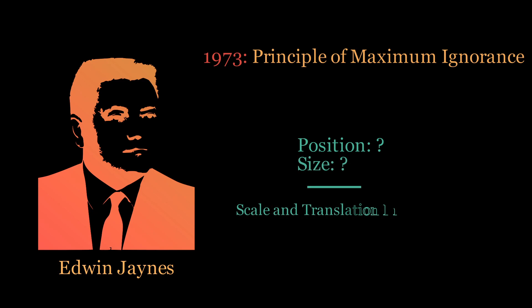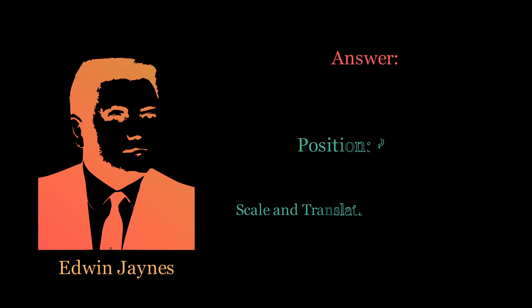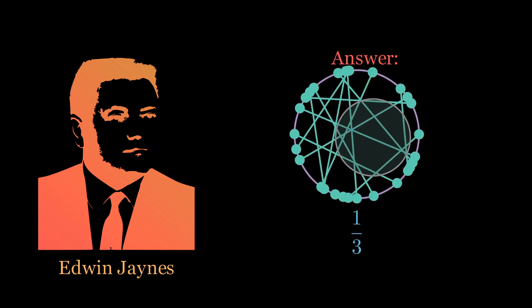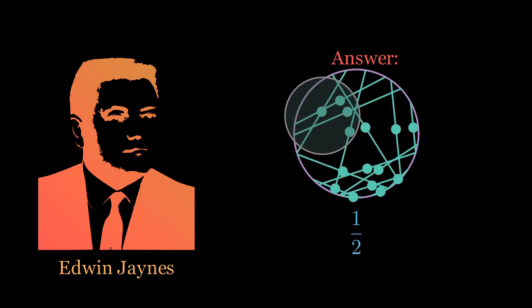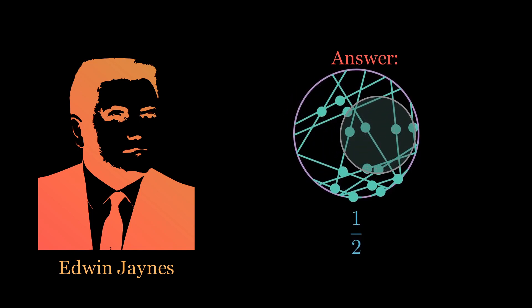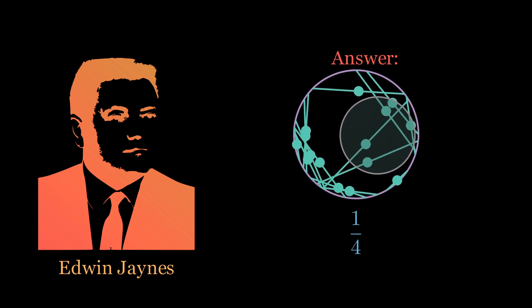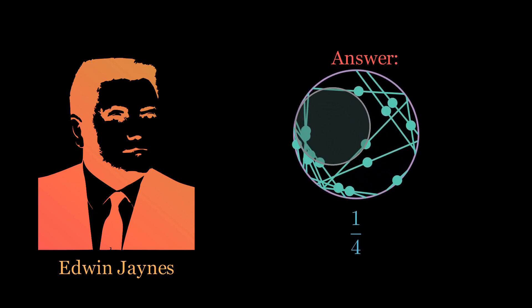In 1973, though, came Edwin Jaynes and proposed a solution based on his principle of maximum ignorance, that we should not use any information that is not given in the statement of the problem. He suggests that since position and size is never mentioned in the question, the solution must be both scale and translation invariant. In other words, changing the size or position of the circle should not change the answer. We can see, then, that this eliminates the first and third method, as moving around a smaller circle around the area would change the number of longer chords. He showed that this invariance is actually satisfied by the 1 half answer, though.